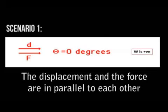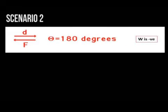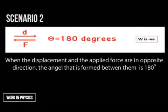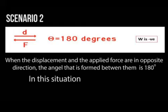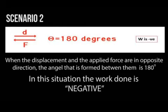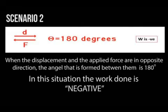Scenario number two: where the displacement and the applied force are in opposite directions, the angle formed between the displacement and the force is 180 degrees. For example, the force is going east and the displacement is moving west — they form a straight line angle of 180 degrees. In this situation the work done is a negative work done, because cos(180°) equals negative one.